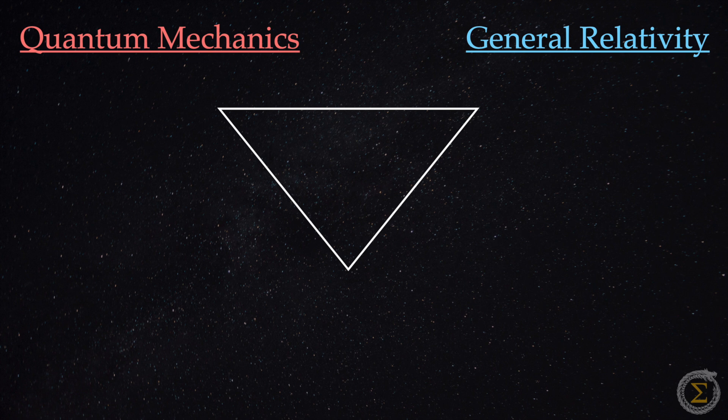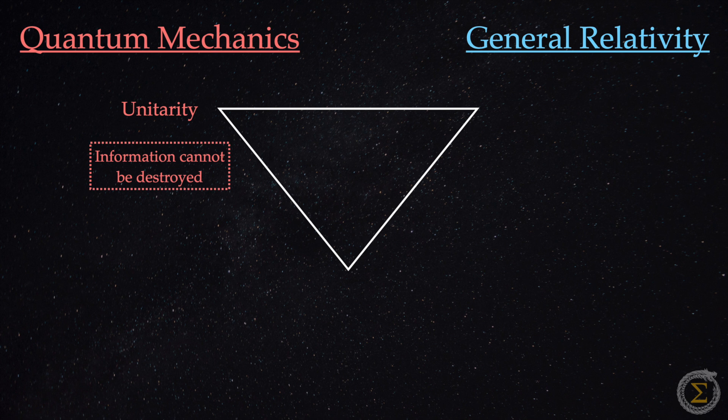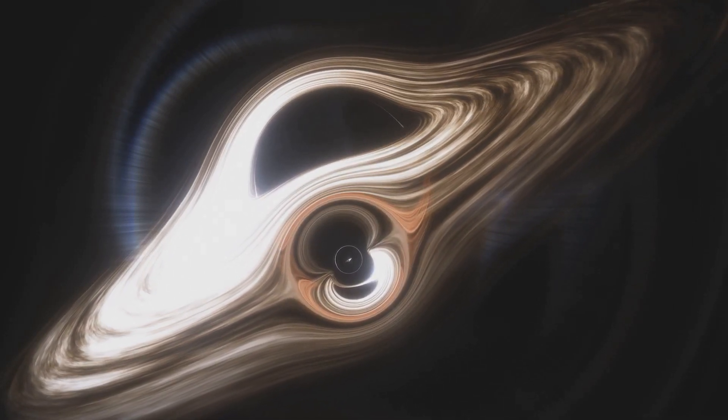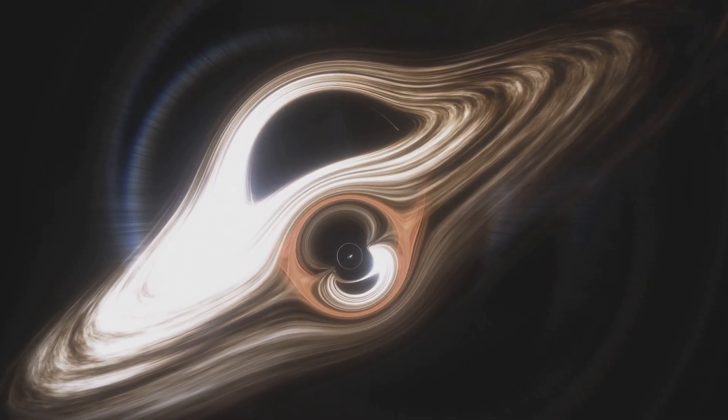Under quantum mechanics, we have unitarity, which demands that information must always be preserved. If you know a system's exact state at one moment, you should be able to calculate its state at any other time. Information is never, ever lost.